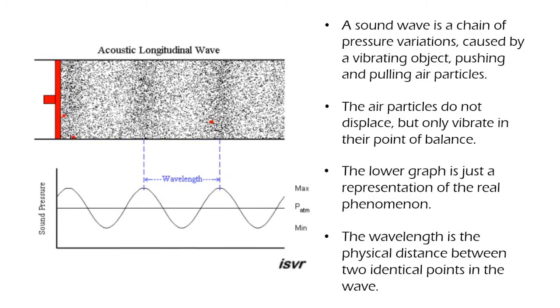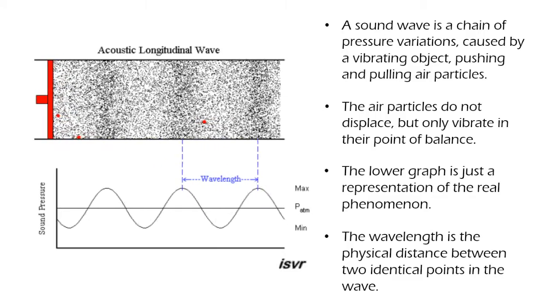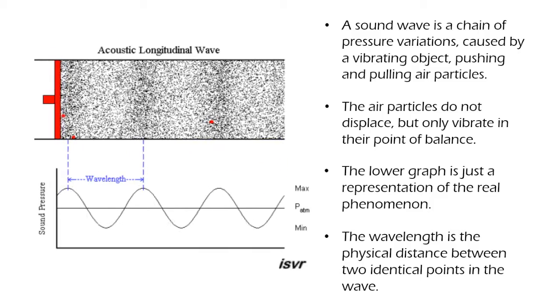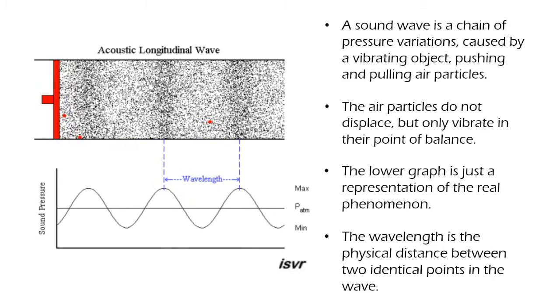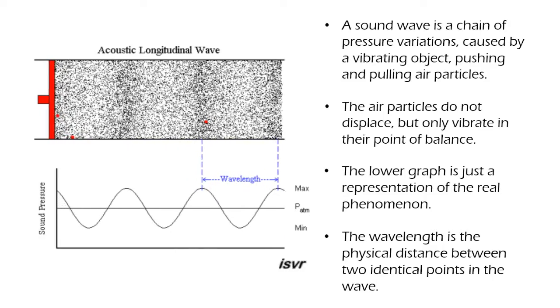The wavelength, given in units such as meters or centimeters, is measured between two identical points in a vibration pattern. And in the audible range, the wavelength can measure from about two centimeters to about 17 meters.